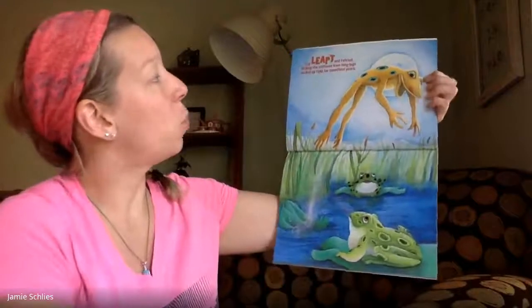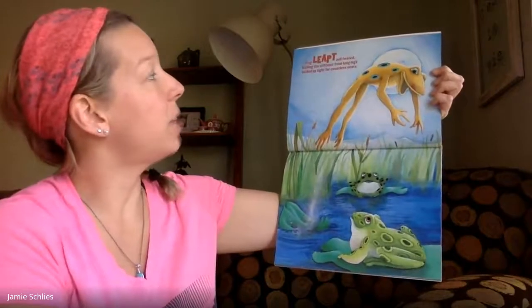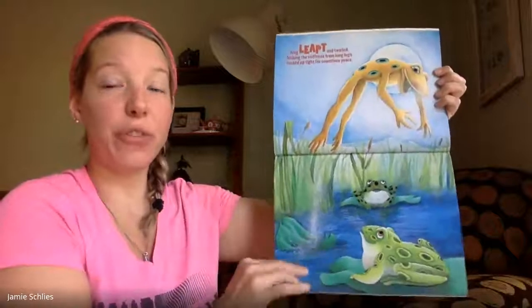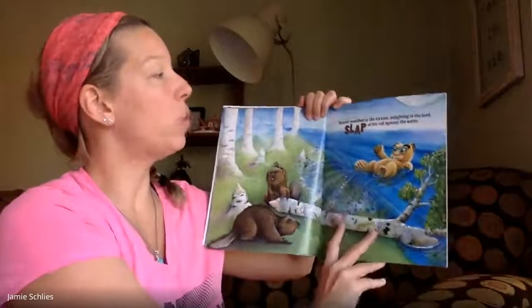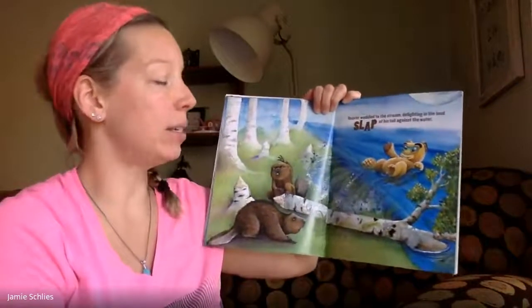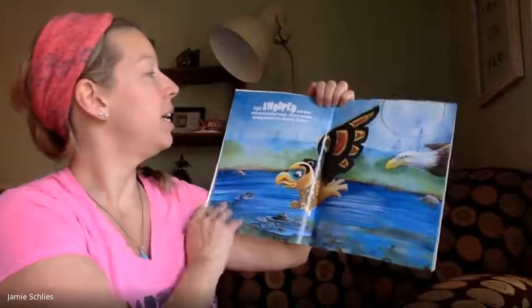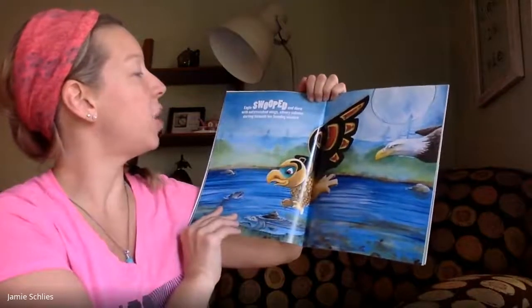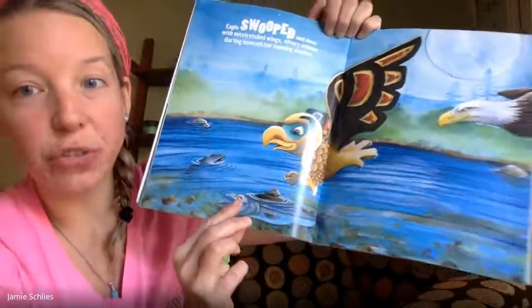Frog leapt and twirled, kicking the stiffness from long legs, tucked up tight for countless years. Lookit, he gets to jump just like the other frogs. Beaver waddled to the stream, delighted in the loud slap of his tail against the water. Eagle swooped and dove with outstretched wings, silvery salmon darting beneath her looming shadow. Looks like she's going to catch a fish.